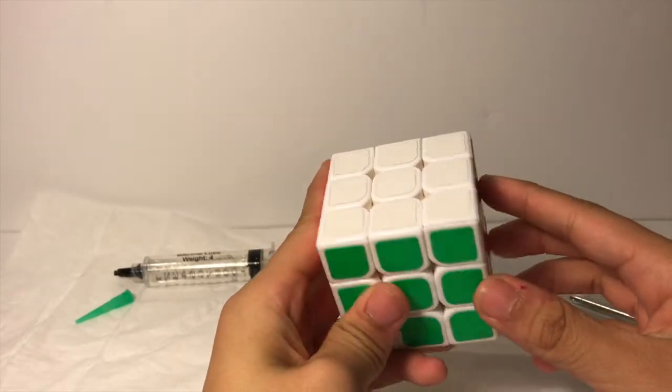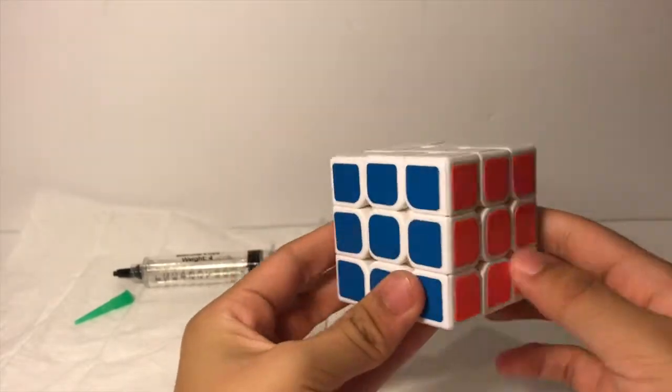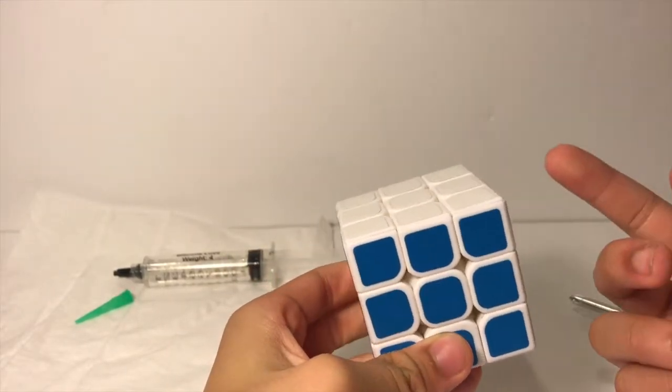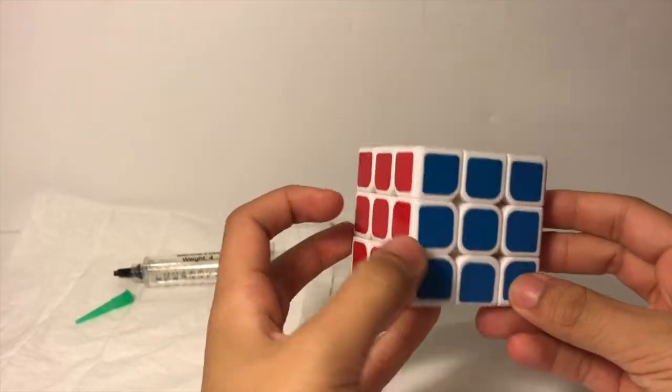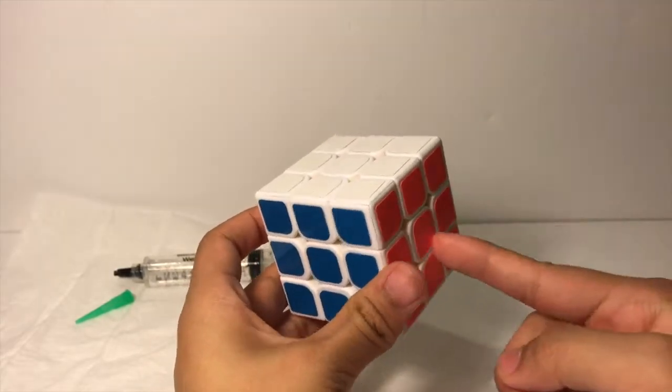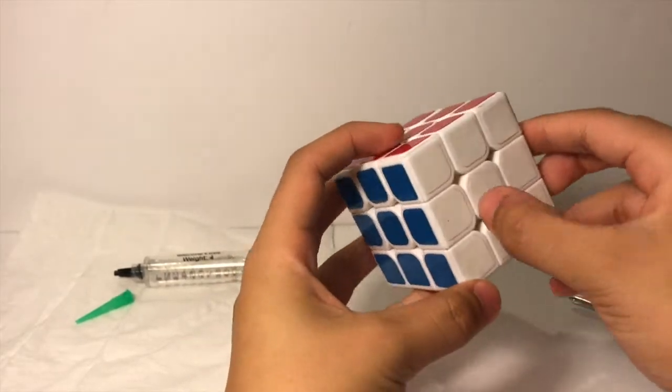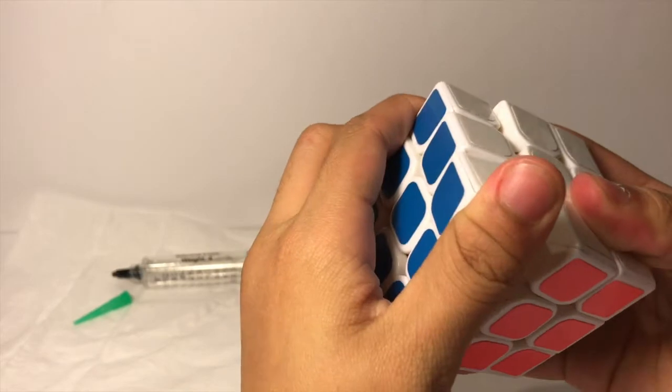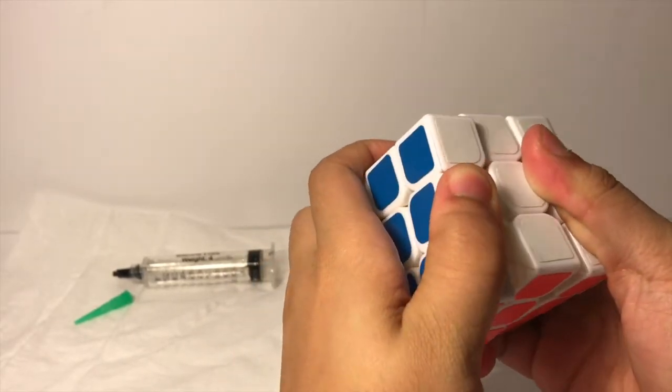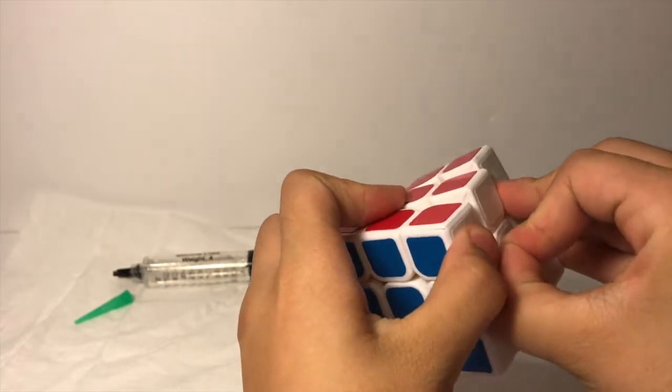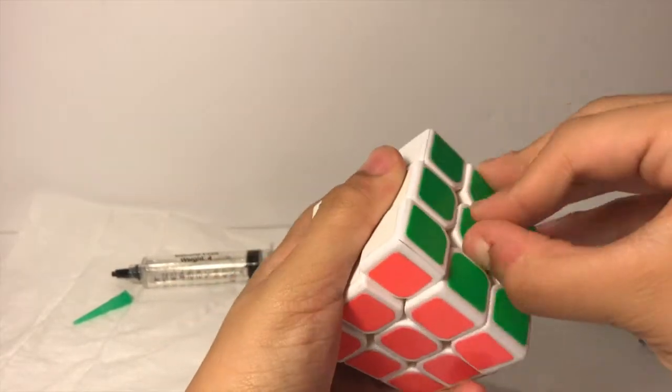We're going to first start off by looking at our color scheme. Make sure you know what stickers are where or where your center caps are. The standard is white on the top, yellow on the bottom, then you have red, blue, and then orange opposite red, and blue opposite green. After you know that, you can go ahead and take your caps off.